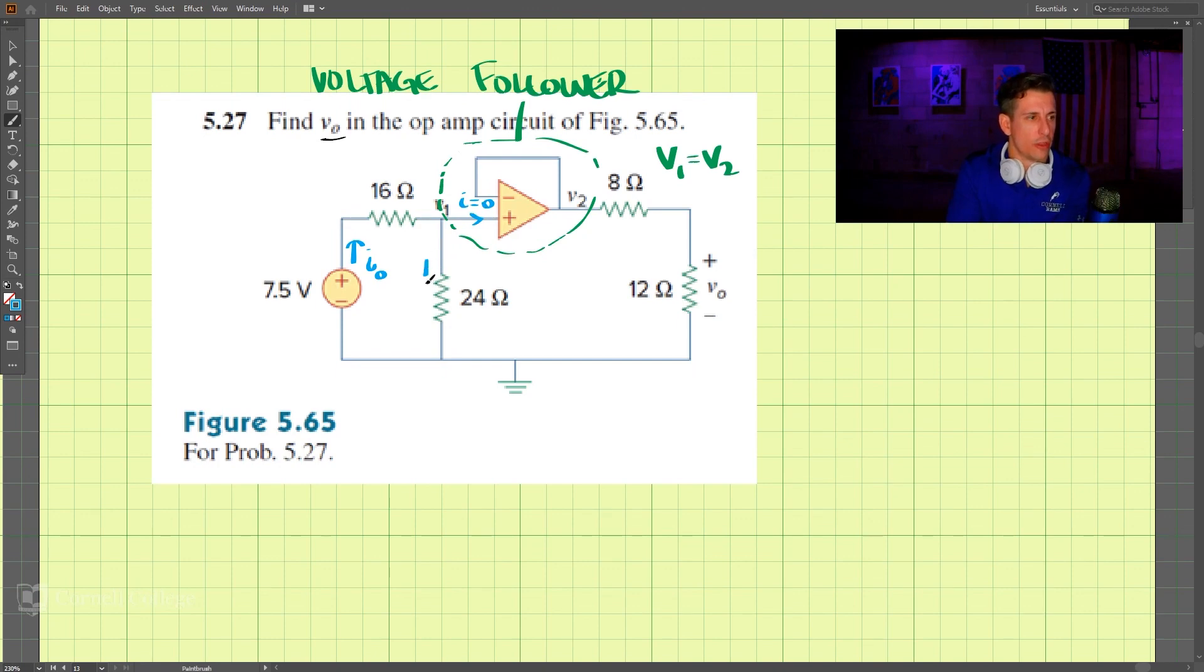No current flows through here. This is i equals zero here. No current goes into this location, so here we have all of i naught. We can treat these two resistors here as in series.